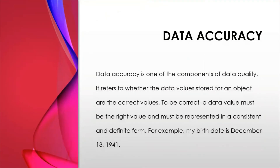Data accuracy is one of the components of data quality. It refers to whether the data values stored for an object are the correct values. To be correct, a data value must be the right value and must be represented in a consistent and definitive form — for example, a date of birth recorded correctly as the 13th of a specific year.